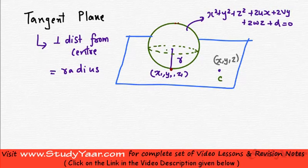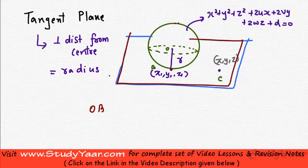Let's just say that this is C, this is O, and this point is B. Then what is OB?